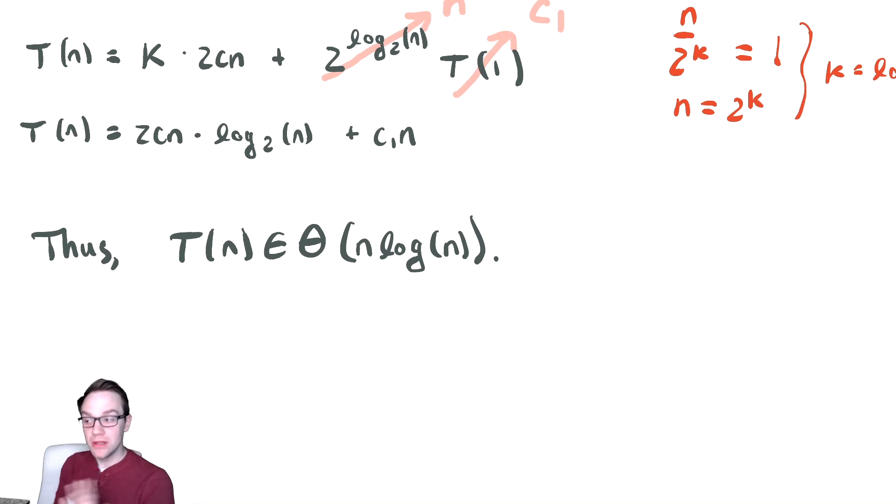Those aren't even remotely comparable. Log in some sense measures the number of digits in a number. It's much, much better than n. This is a fantastic runtime for a sorting algorithm. In fact, you can prove that you can't do better than this in the worst case. N log n is a fantastic running time, and that is the running time of merge sort.